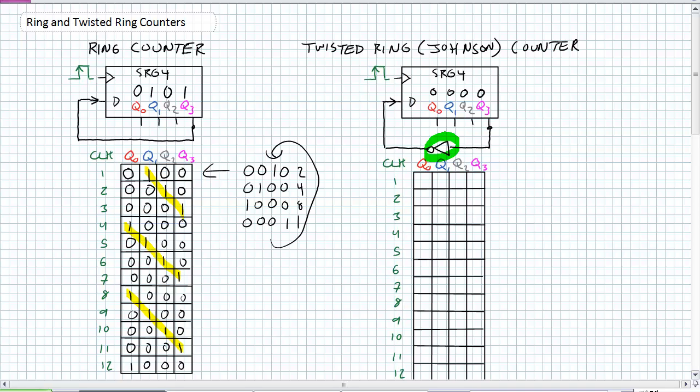So if I did have all zeros on there, first clock pulse comes along. I shift it right, I invert what Q3 had on it and shift it back in. What happens now? I shift it right, I invert what Q3 had on it, shift it back in. Third clock pulse again, so I shift it right, I invert what Q3 had on it, shift it back in. You guessed it, shift it right, invert what Q3 had on it and shift it back in.